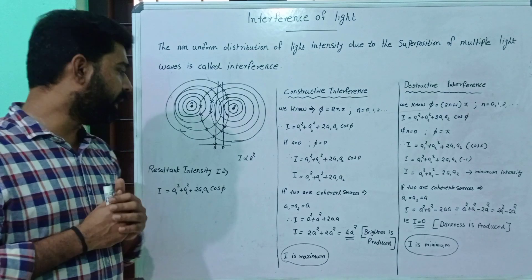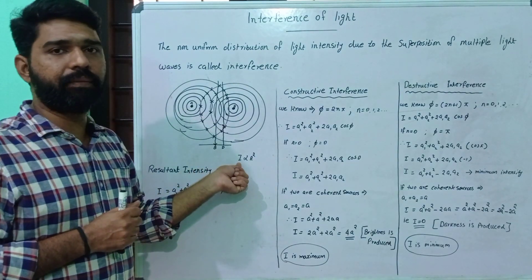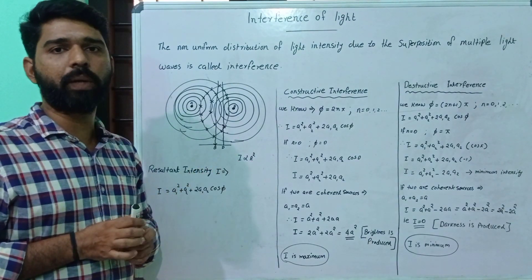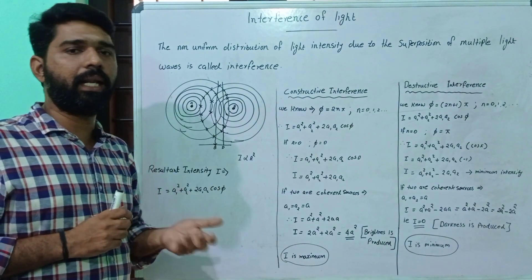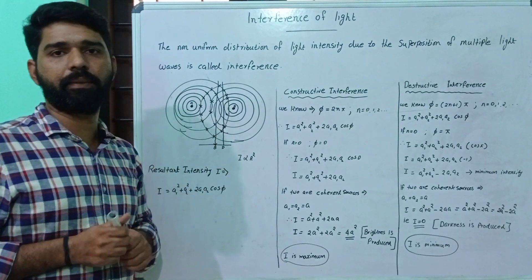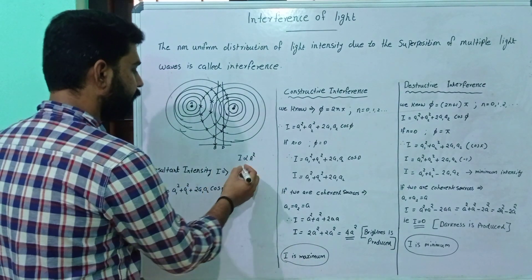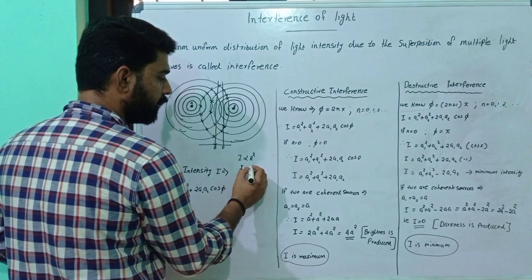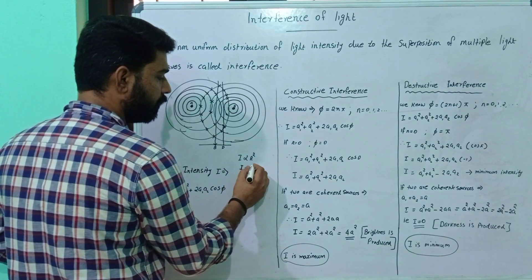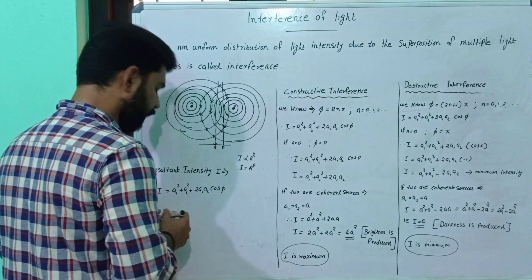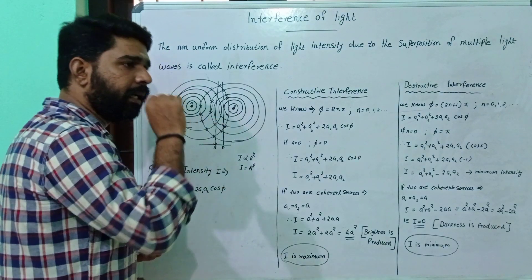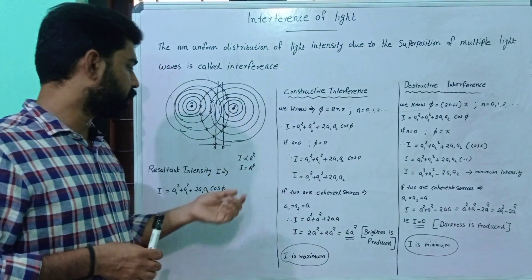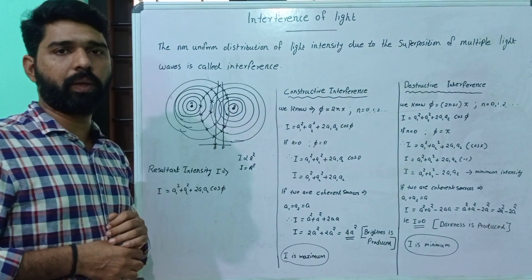Now, the intensity of a wave is directly proportional to the square of the amplitude. So we say that intensity I is equal to A squared.